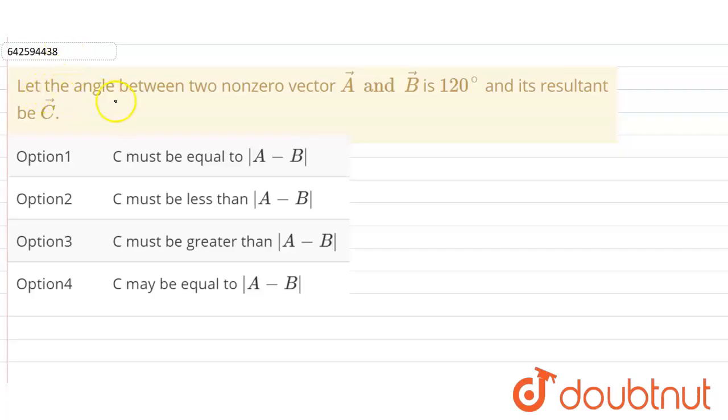Hello everyone, so our question is: let the angle between the two non-zero vectors A and B is 120 degrees and its resultant is C. Okay, so we have been given two non-zero vectors. Let us suppose this is A vector, this is B vector, having angle between them is 120 degrees and this is the resultant vector, C vector.